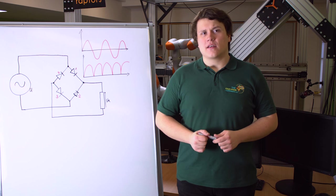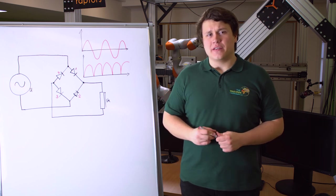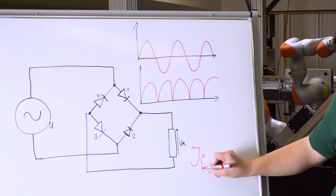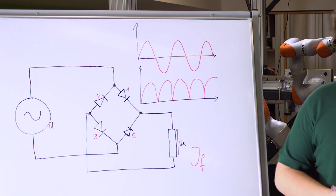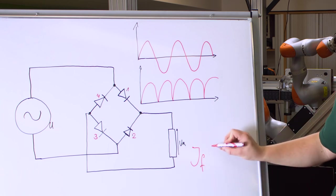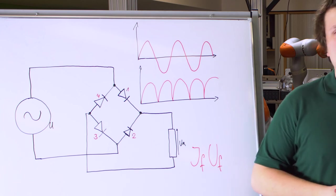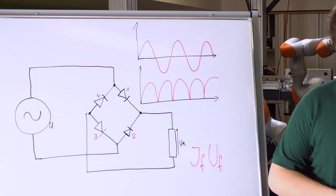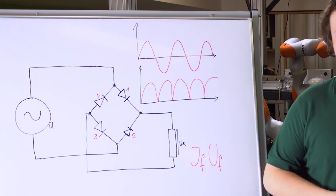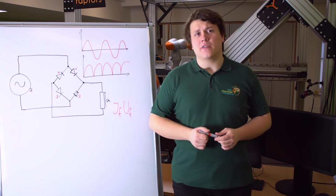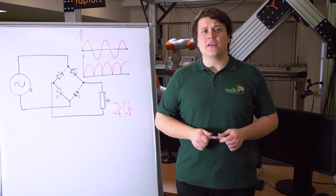Diodes have two basic parameters: the maximum current that can flow through the diode, and the maximum voltage that can be applied in the opposite direction without breaking the diode or causing a short circuit. They also have another important parameter: voltage drop. For silicon or other normal diodes, it is usually 0.7 up to 1 volt.